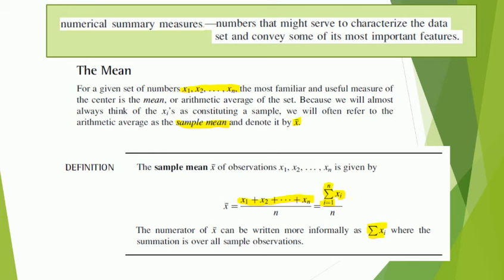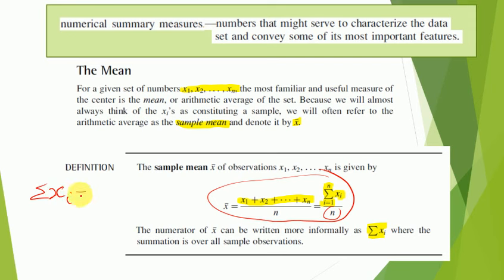One can also use a more informal notation, just summation xᵢ implying over all the x values in the sample of size n. Something else to point out: if you take n to the left-hand side of the mean formula, you also see that the sum of the x's is equal to n times the mean, n x̄. Remember that relation — we'll be using it again.